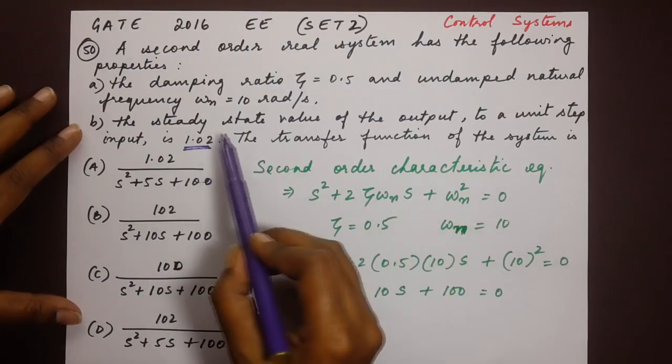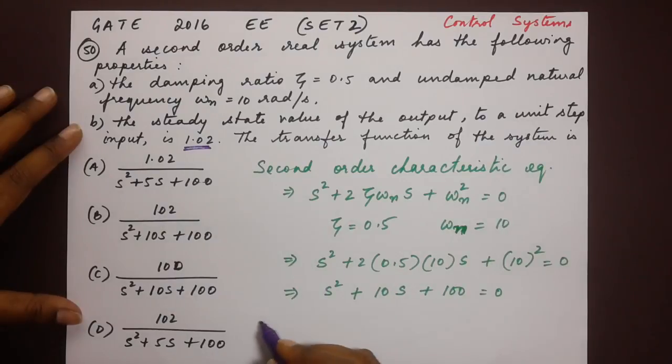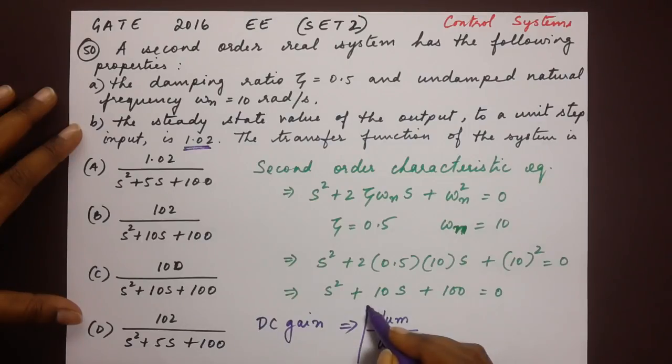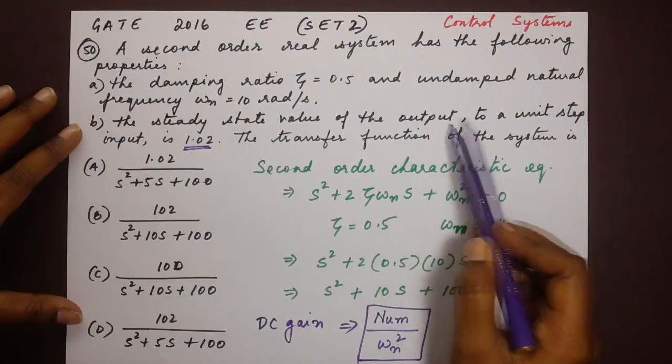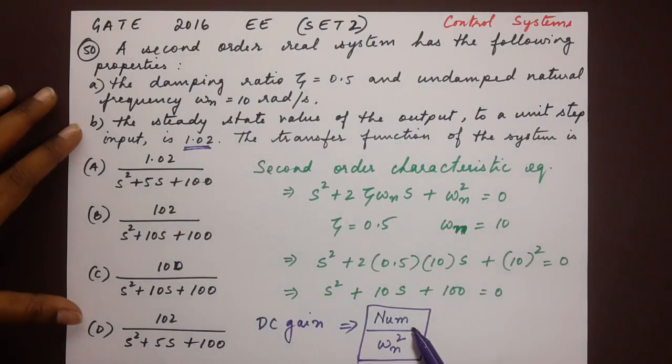The ratio of the output to unit step input is DC gain and that would be the numerator divided by ωn². This is sort of a trick, easy way of remembering the output to a unit step input. You can take it as the numerator of the transfer function divided by ωn². The ωn value we already have as 100.